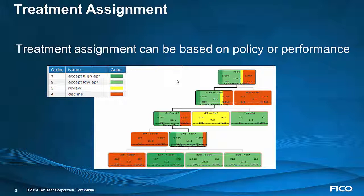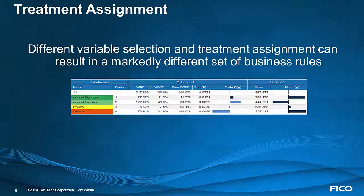You might look at both performances. In this case, we're accepting people with fairly low revenue and giving them the best APR — that might not be too desirable. As you review the effect of your treatment, you can summarize up to the treatment level and look at both bad rate as well as average revenue, or any other performances that you have available.